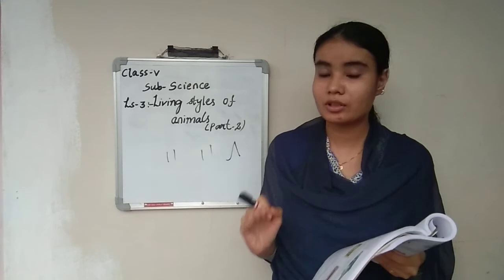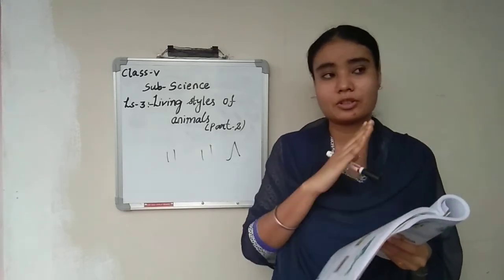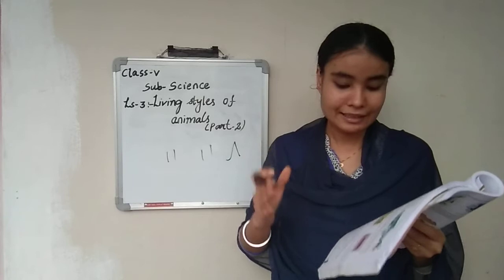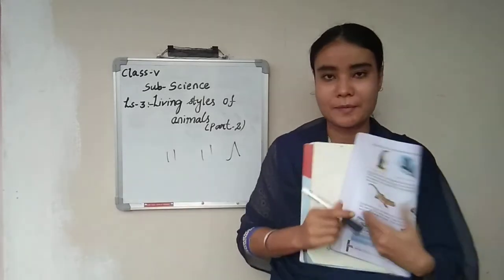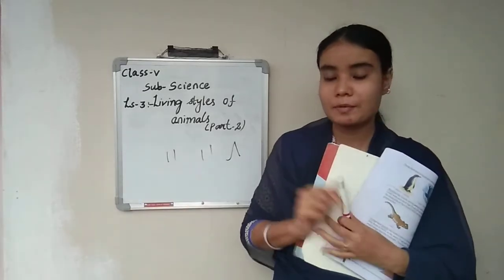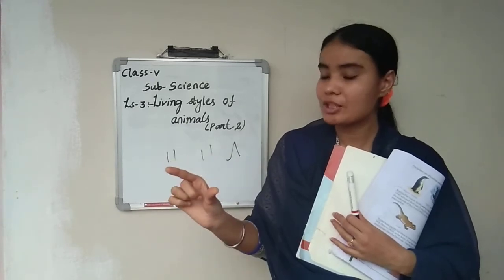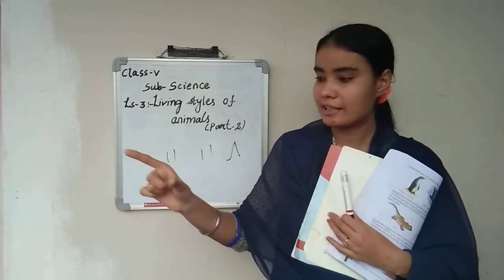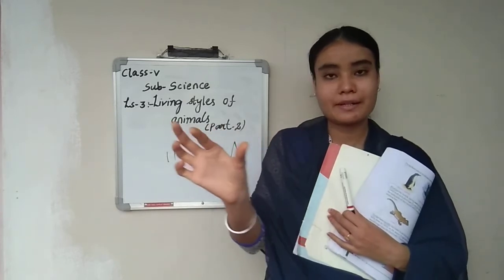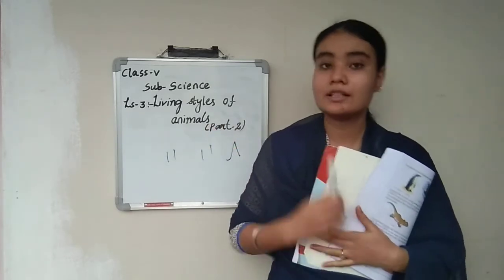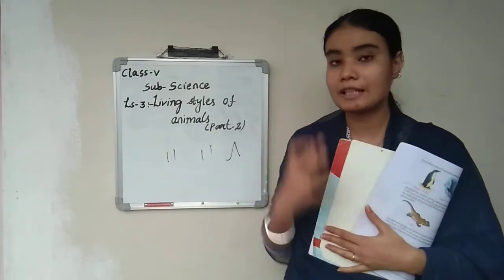Earthworm is a land animal. Earthworms do not have any locomotory organ — they have no legs, no wings, nothing — but they can expand and contract through their body segments to move. These are the different locomotory organs in different types of animals.